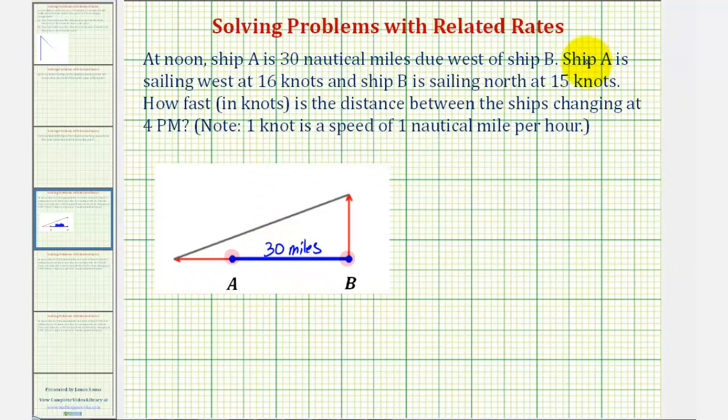Next, ship A is sailing west at 16 knots, so ship A is sailing in this direction, and ship B is sailing north at 15 knots, so ship B is sailing in this direction.